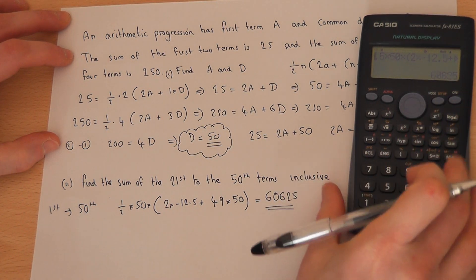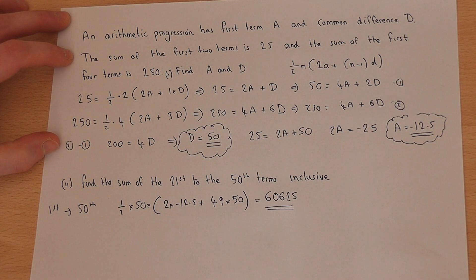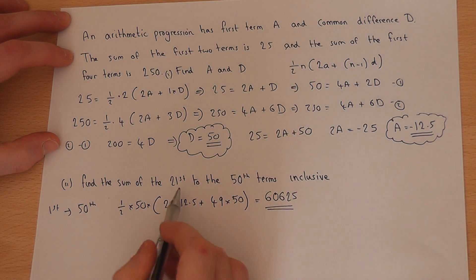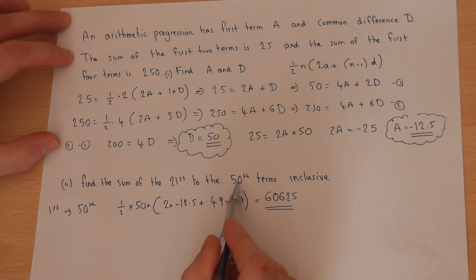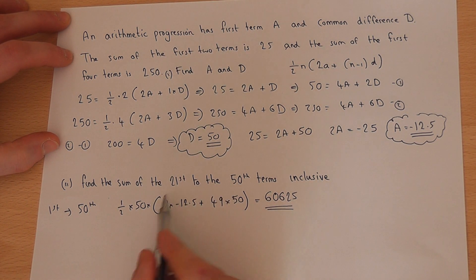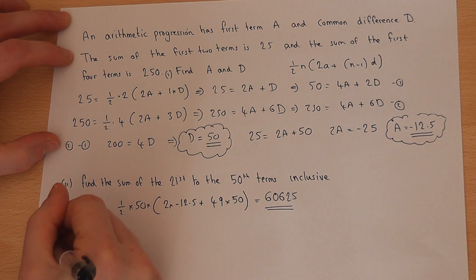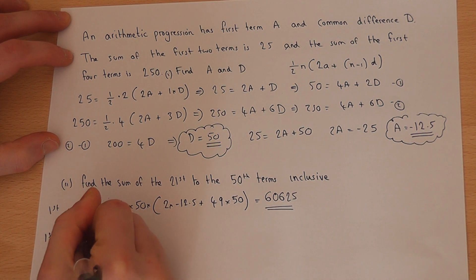Now that's the sum of the first 50 terms. But I want the sum of the 21st to the 50th, so I don't want to include the first 20 terms. So I'm going to find the sum of the first to the 20th.